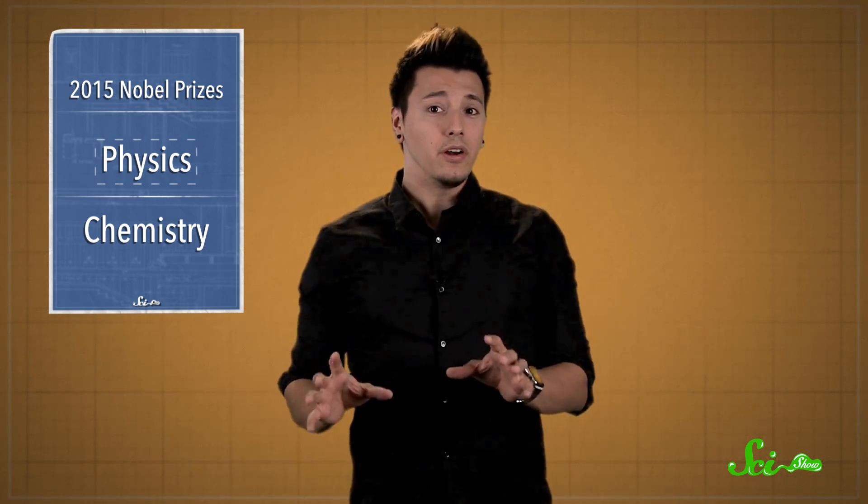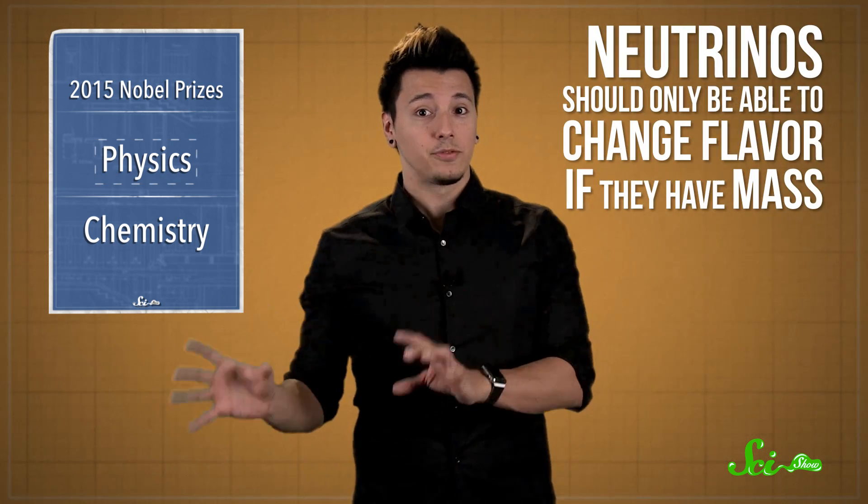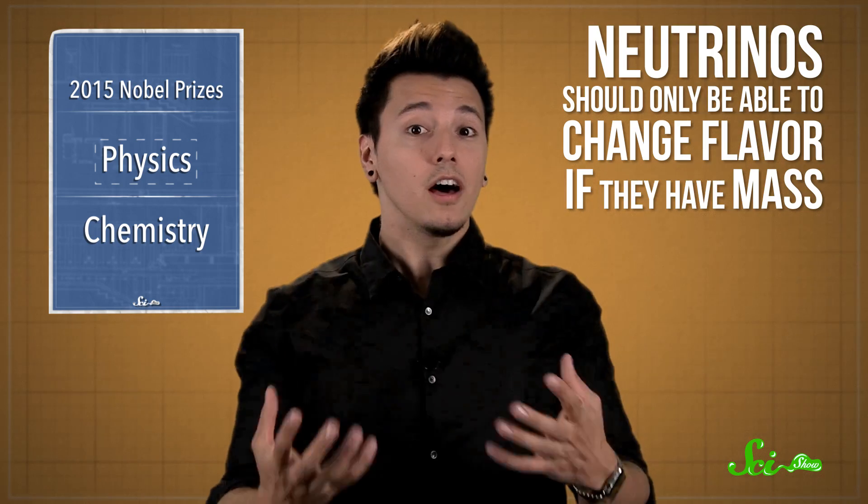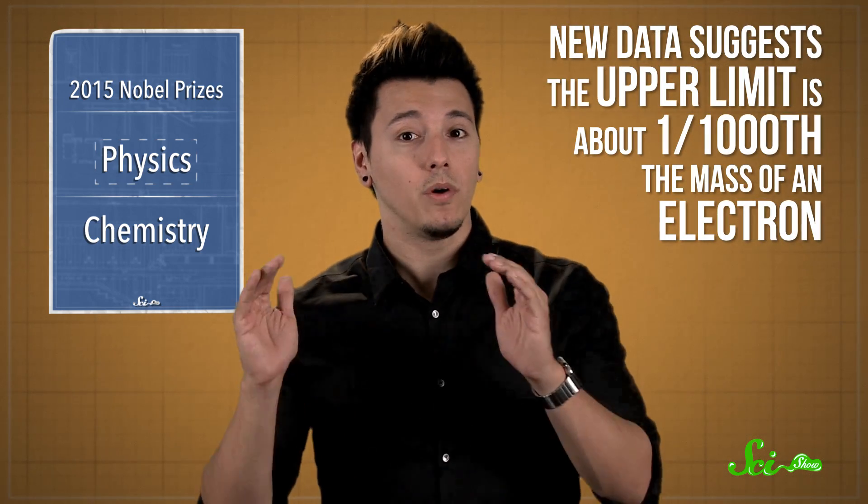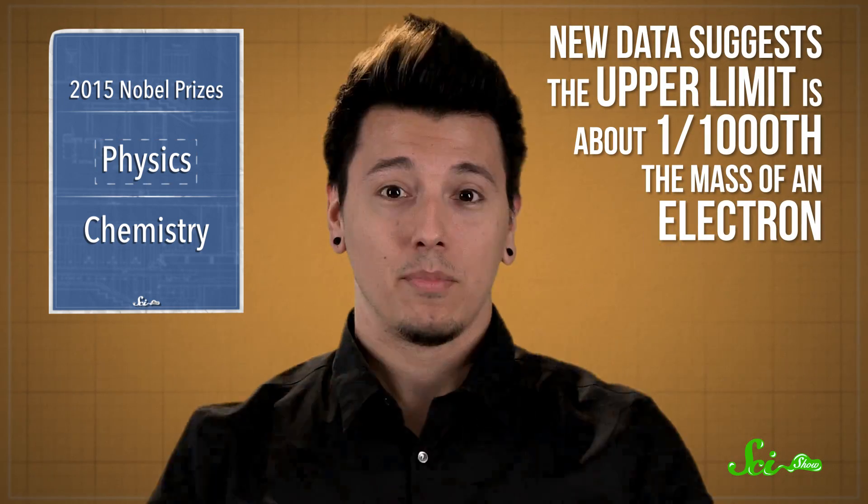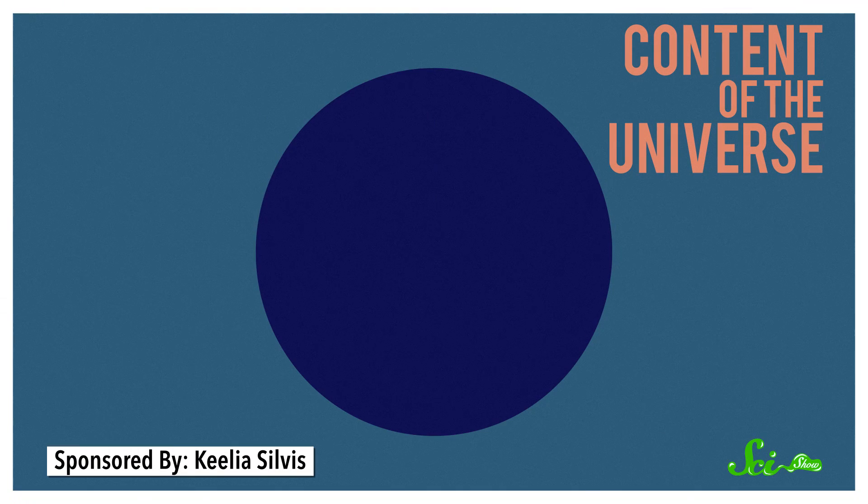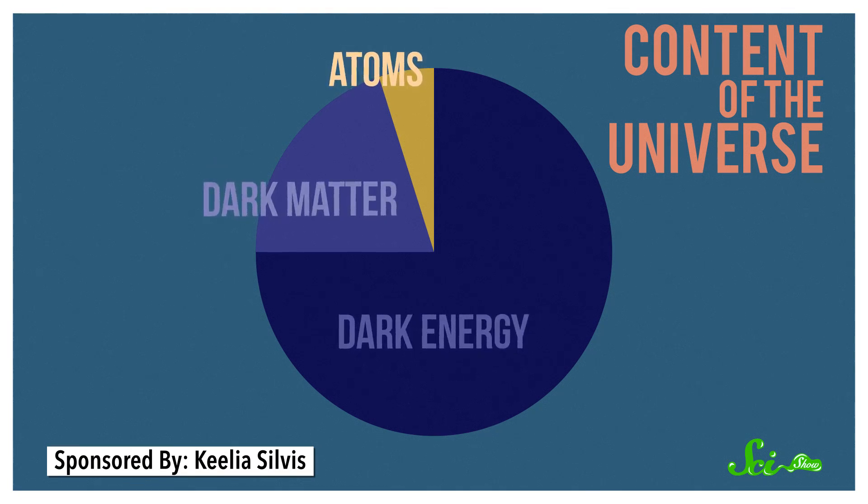According to quantum theory, neutrinos should only be able to change flavor if they have mass. Not a lot of mass – the new data suggests that the upper limit is about one one-thousandth the mass of an electron. But the fact that they have mass at all means that there are some major things we don't know about some of the most abundant particles in the universe. And neutrinos are now a real contender for dark matter, the universe's so-called missing mass.